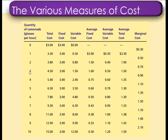When producing three units, our total cost is 4.50, so we divide 4.50 by 3, which gives us an average total cost of 1.50. When we are producing four units, our total cost is 5.40, so we divide 5.40 by 4, which gives us an average total cost of 1.35.